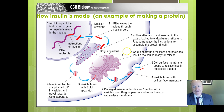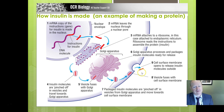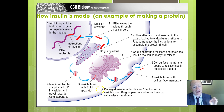To recap: mRNA is made from a DNA template, exits through the nuclear pore, and goes to the rough endoplasmic reticulum. From there the protein moves to the Golgi apparatus, and from the Golgi it fuses with the cell surface membrane for secretion. Insulin is the classic example, but this applies to any secreted protein — if an exam question mentions an unfamiliar protein, check that it's a protein and apply the same mechanism.